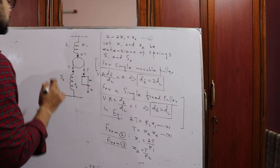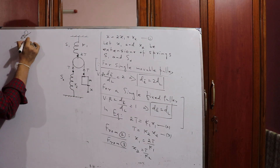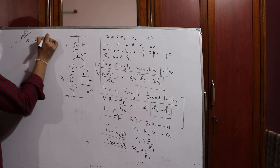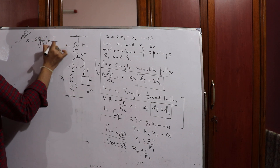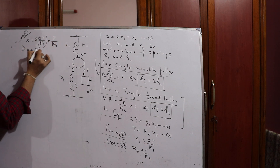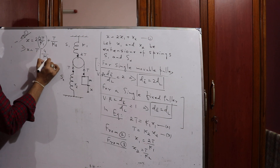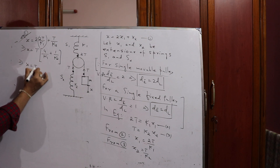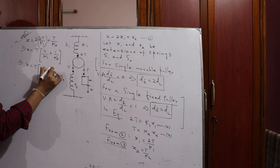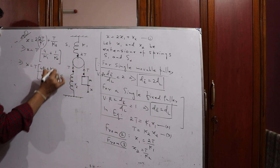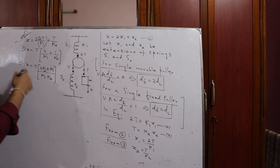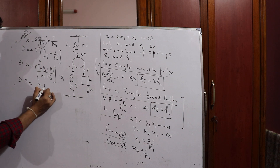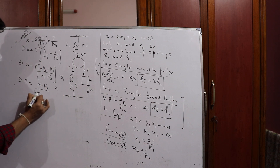Substituting these values into equation 1: x = 2x1 + x2 = 2·(2T/k1) + T/k2 = T·(4/k1 + 1/k2). Taking T common, x = T·(4k2 + k1)/(k1·k2). Therefore, T = k1·k2·x / (4k2 + k1).